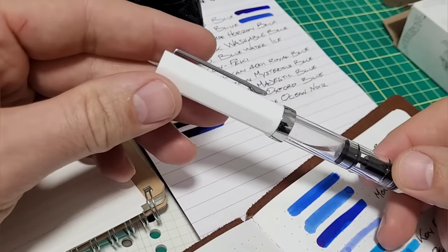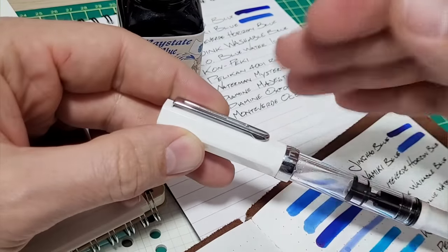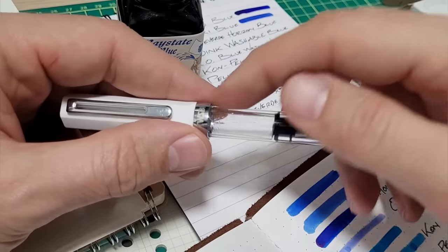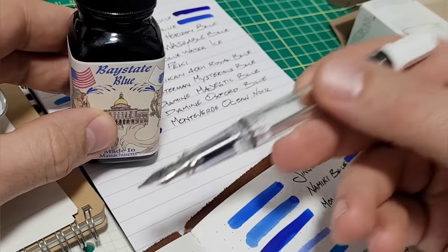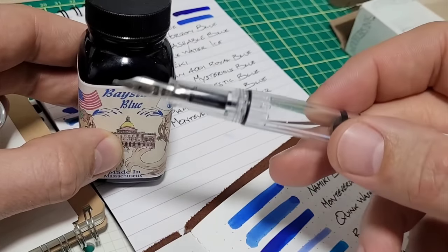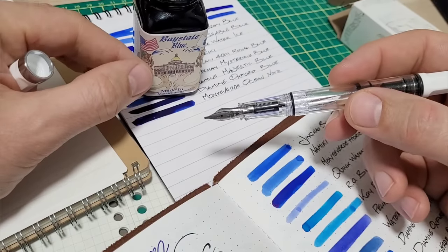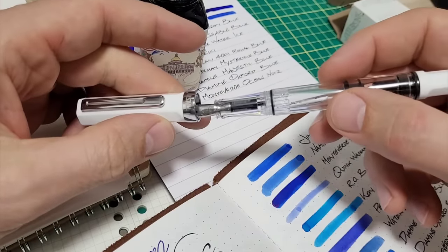I figured let's put it in this TWSBI Eco white body here cap and that. So maybe it stains it. I don't know. Let's find out. It's clear. People say once you fill a pen with Bay State Blue it will forever have to be designated a Bay State Blue pen. So I don't use this one a ton. Everyone has one of these. So let's try this out.